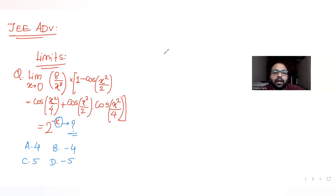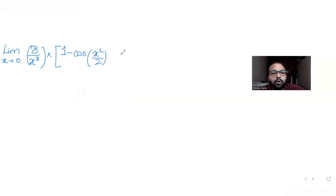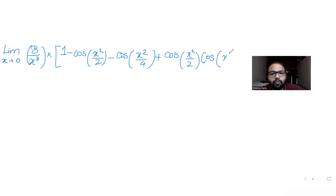Let's understand how to solve this. We rewrite the limit: x tends to 0, 8 upon x raised to 8, multiplied with 1 minus cos(x²/2) minus cos(x²/4) plus the product of the two. We'll evaluate this limit and then equate the answer with 2 raised to minus k to get k.